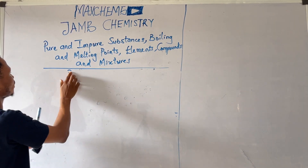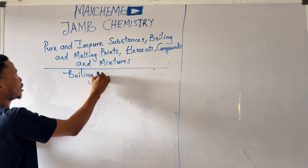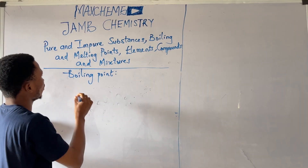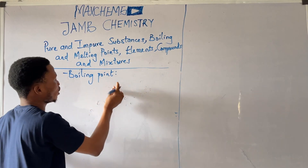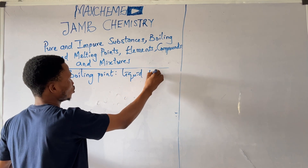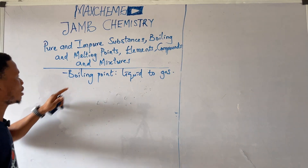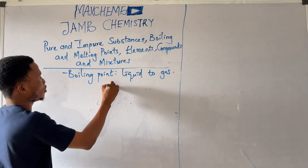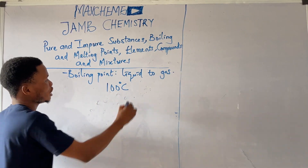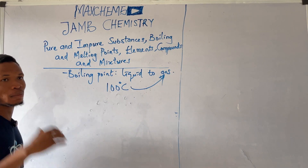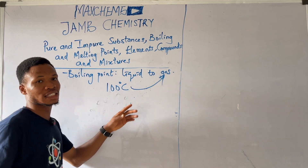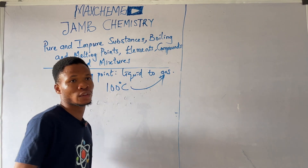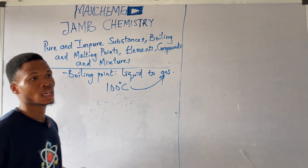So what is boiling point? Boiling point is the temperature of the conversion of a substance from liquid to gas. For example, water will boil at 100 degrees Celsius — that means at 100 degrees Celsius it will convert to gas. So boiling point is the temperature that a liquid will turn to gas. And you should know that pure substances have a fixed boiling point, while impure substances do not have a fixed boiling point.